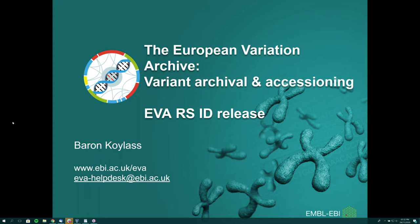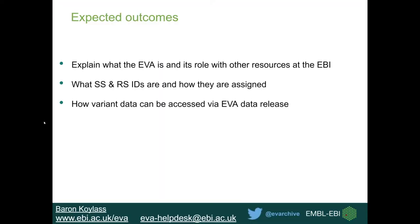We'll go through some expected outcomes from this webinar. We'll cover the EVA as a whole and how it relates and works with other archives at the European Bioinformatics Institute. We'll cover what SS and RSIDs are and how they are assigned to individual variants, and then how the variant data can be accessed. There are a number of access methods, some of which can be integrated into your own pipelines so data can be retrieved automatically.